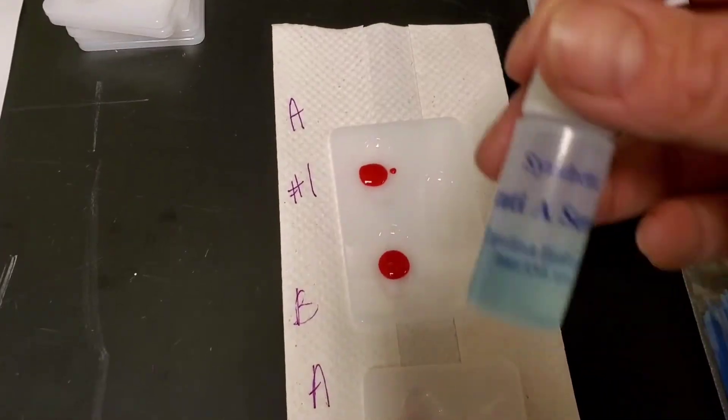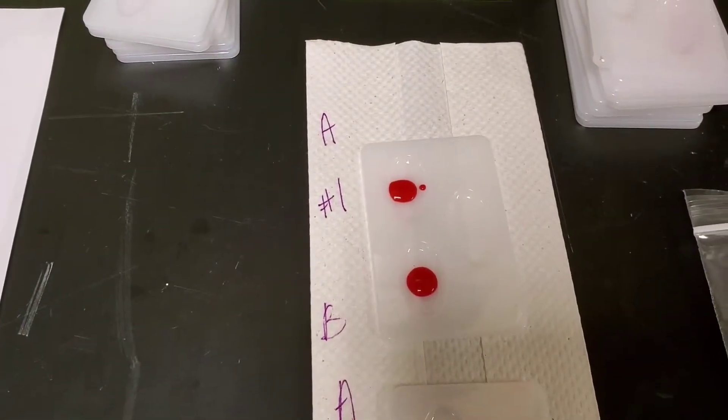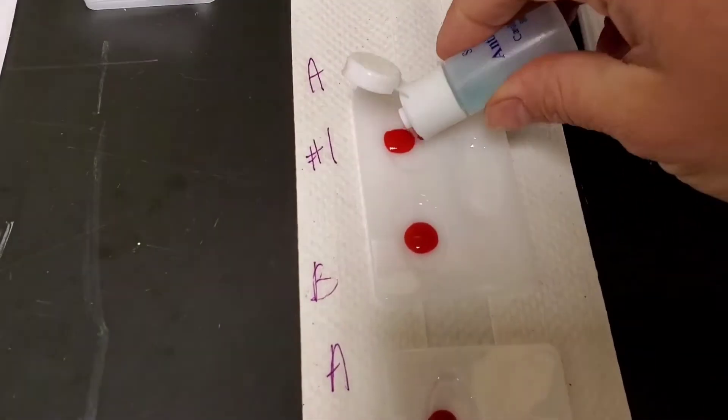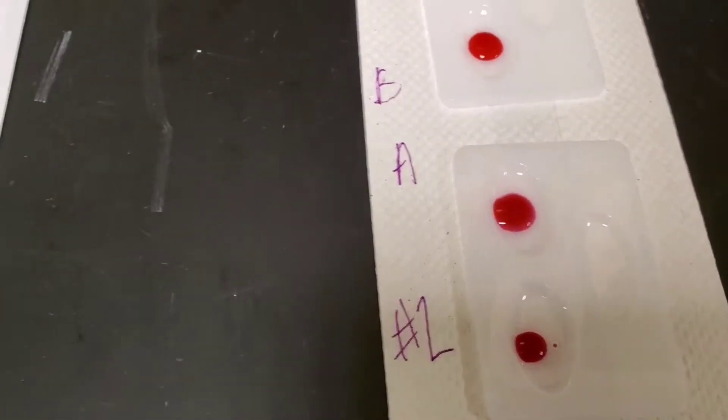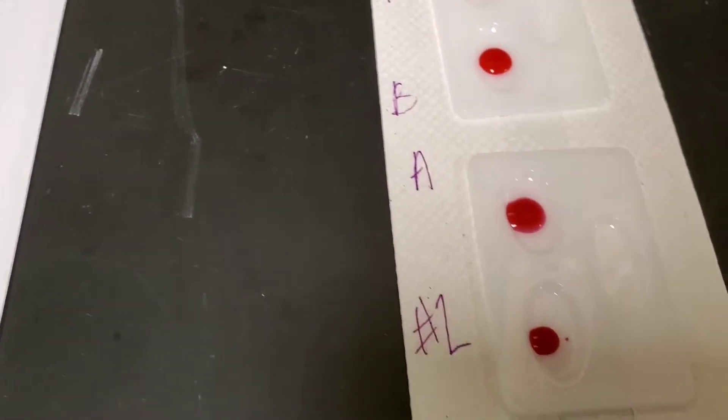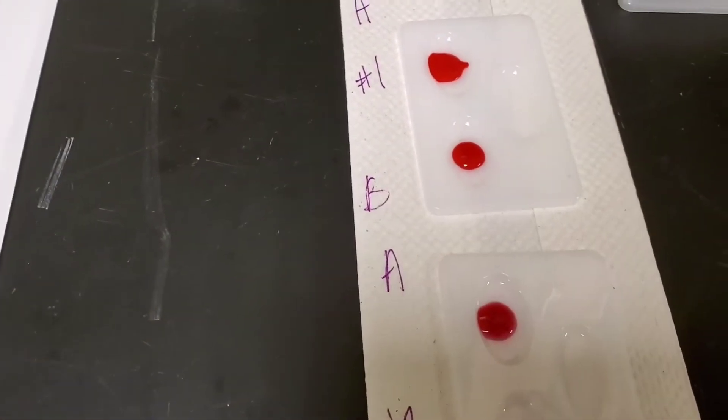Now I'm going to take the anti-A serum and put it in the A plates for both patient one and patient two. And now I'm going to do the same thing with the B serum in well B for patient one and in well B for patient two.